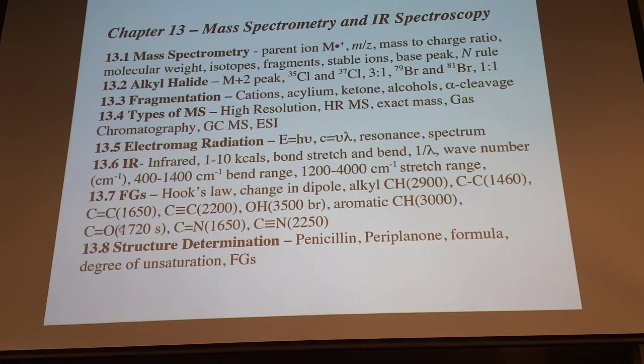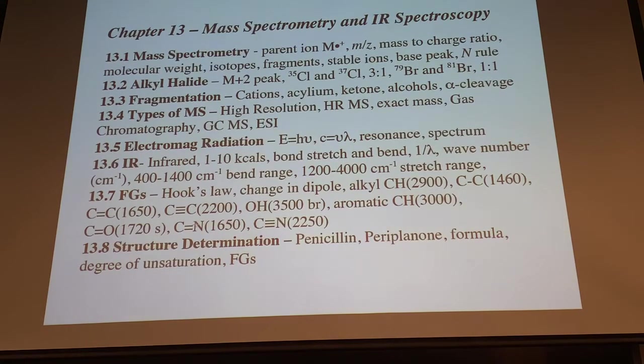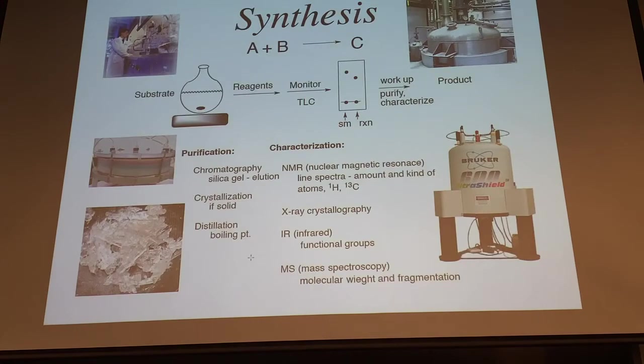Then we have carbonyls, ketones, aldehydes, esters, amides, around 1700. Carbon-nitrogen double bonds, 1650. And carbon-nitrogen triple bonds, kind of like carbon-carbon triple bonds, a little bit higher at 2250 there. We'll show you some examples of how it's determined there.